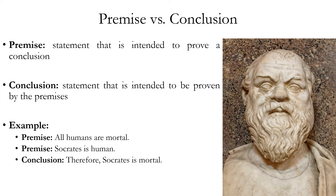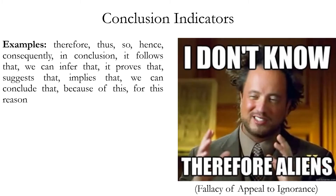The conclusion is the main point that the argument is trying to prove. We can often identify premises and conclusions by looking at indicator words. Here's a list of conclusion indicators. The most common is 'therefore.' Others include: thus, so, hence, consequently, in conclusion, it follows that, we can infer that, it proves that, this suggests that, implies that, we can conclude that, because of this, and for this reason.